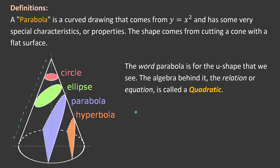The word parabola refers to the shape — it's for the graph. But if we wanted to talk about the math behind it, like the equation y equals x squared, that is called a quadratic. So the relationship between y and x is happening in a quadratic fashion.